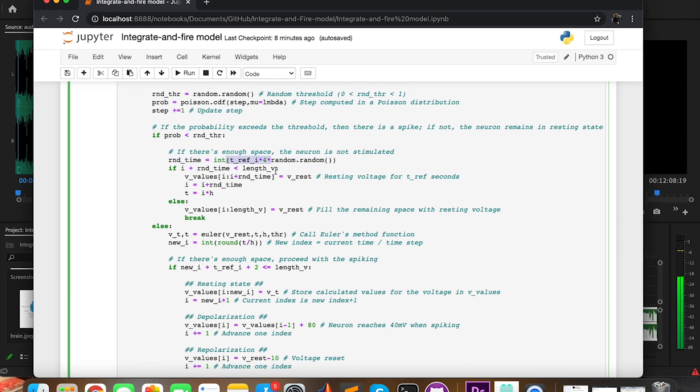If there is enough time, that is i plus the random period of time is less than the length of the array, then we will fill that space with the resting voltage. If there isn't enough space, then we will fill the remaining space with the resting voltage.